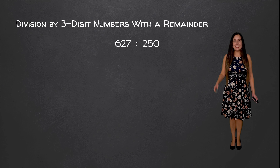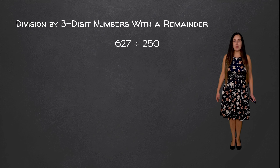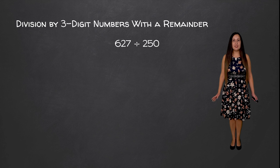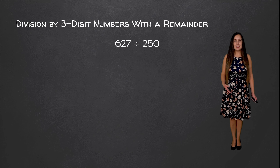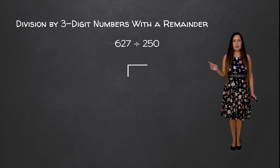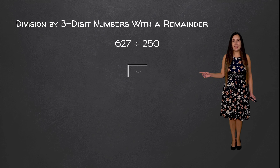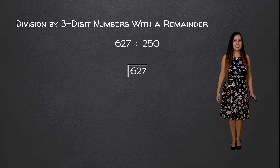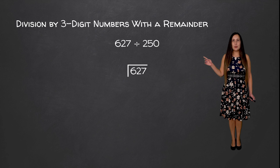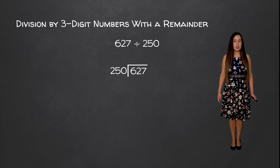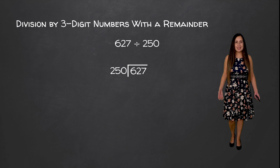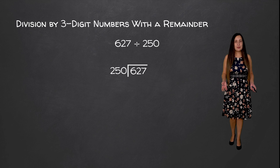To get us started, we have 627 divided by 250. We're going to set this up using long division, so 627 is going to go on the inside since that's our dividend, and 250 is going to go on the outside since that's our divisor.